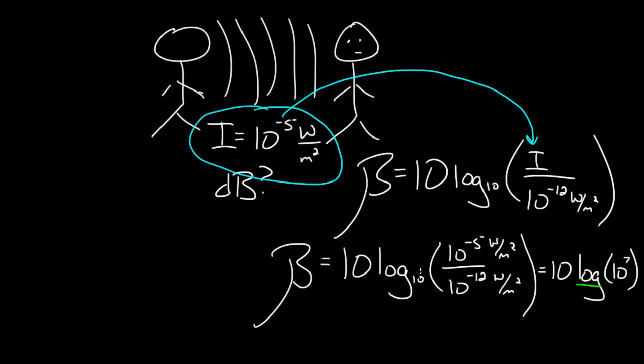remember what log does, it asks, what number do I raise 10 to in order to get the thing in the parentheses? Well, the number I raise 10 to to get the thing in this parentheses, it's already 10 to the seventh, it's already in this form, so I just raise 10 to the seventh to get 10 to the seventh. So the answer to log base 10 of 10 to the seventh is just seven.